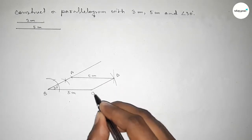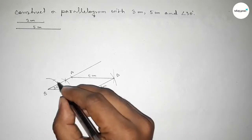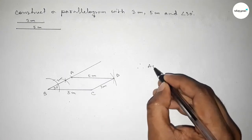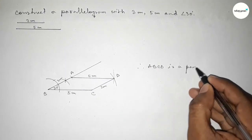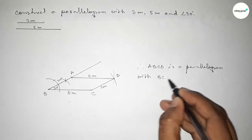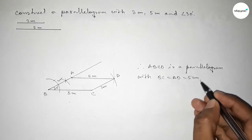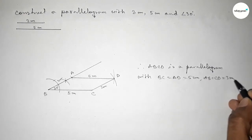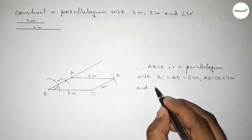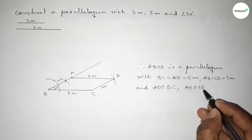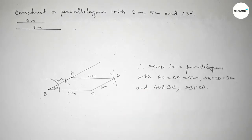This side is 3 centimeters and the opposite and parallel side is also 3 centimeters. Therefore, ABCD is a parallelogram with BC equal to AD equal to 5 centimeters, and AB equal to CD equal to 3 centimeters. Also, AD is parallel to BC and AB is parallel to CD. That's all — thanks for watching. If this video is helpful to you, please share it.